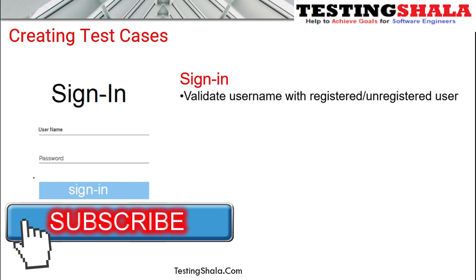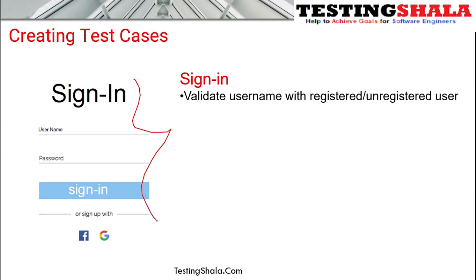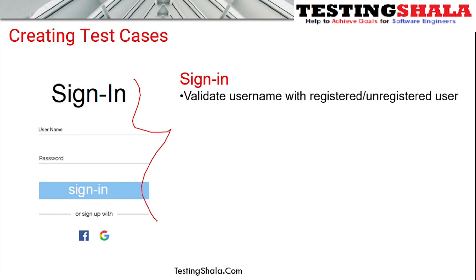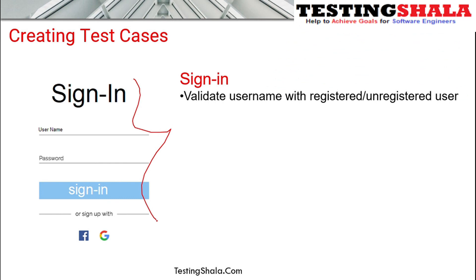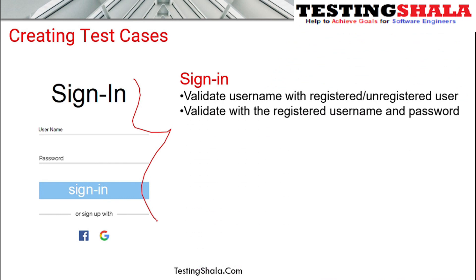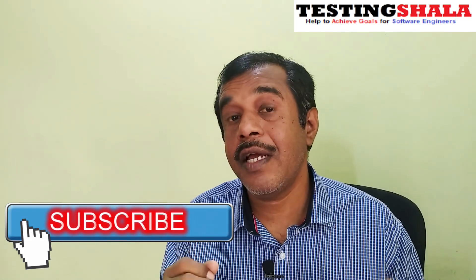The sign-in page test cases will include entering a valid or invalid username — registered versus unregistered users. With a registered username and valid password, you should be able to log in. All other combinations — invalid username, wrong password — should cause login to fail, because that user is not available in the database. These various combinations help you break the application by testing all invalid scenarios.